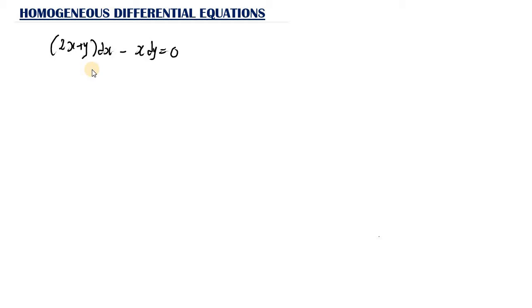What you need to do is replace y with v·s. So wherever you see y, you are going to replace it with v·s. Then we are going to differentiate y = v·s using the product rule.